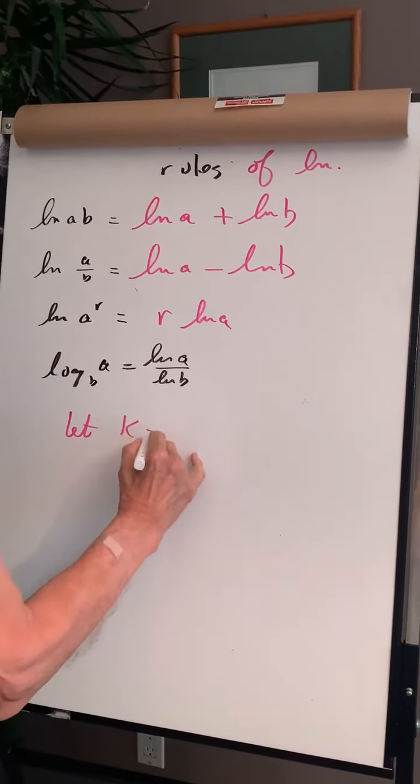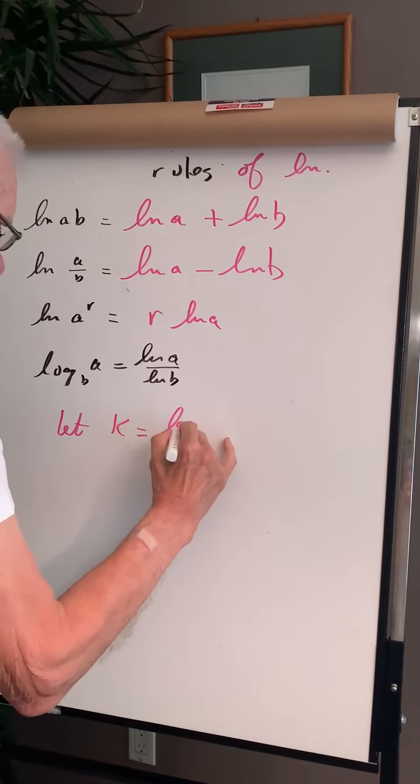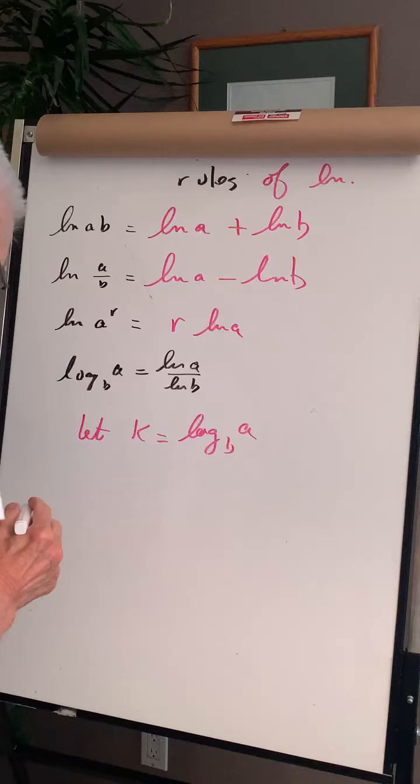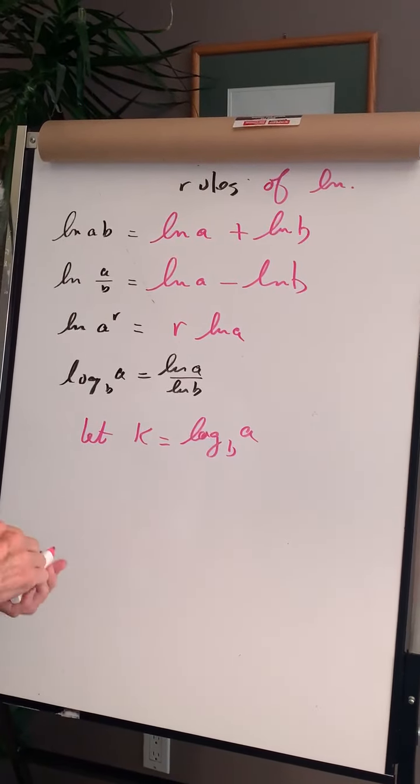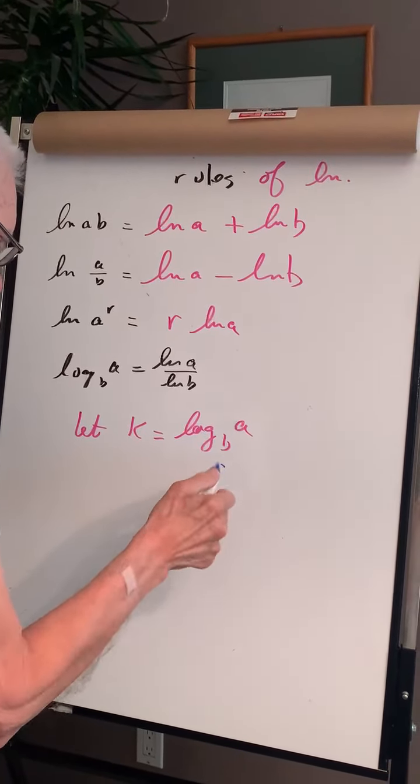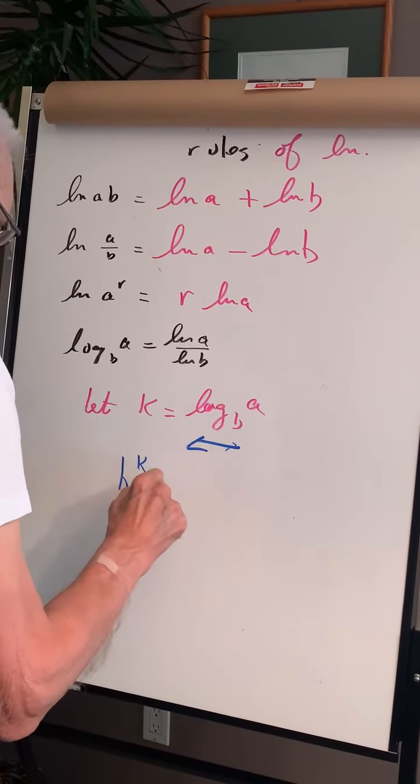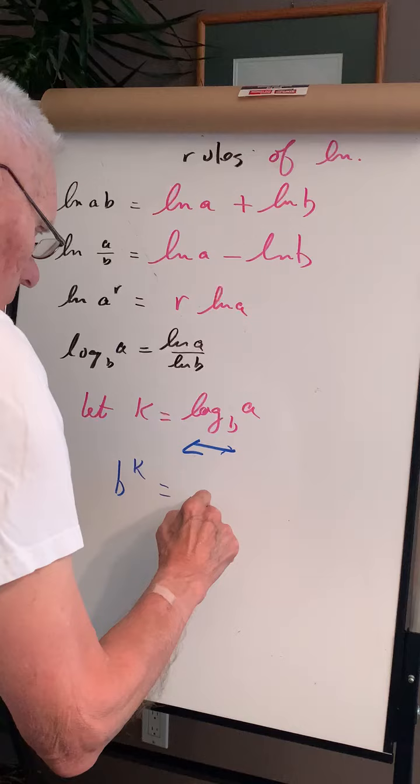Let K equal the log base B of A. Let B move over and play base. So B to the K is equal to A.